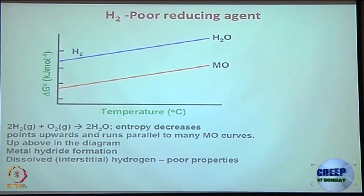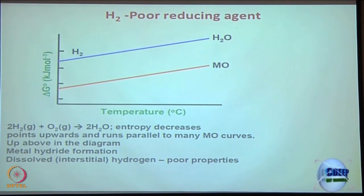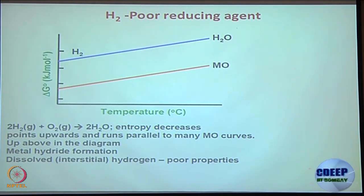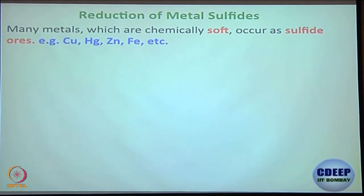There are some reactions where you can utilize hydrogen for the reduction of corresponding metal oxide to metal, but you have to see relatively where hydrogen is with respect to other metal oxide curves in the Ellingham diagram. However, it is not a generalized solution. The generalized solution is charcoal — that is why you see charcoal everywhere.